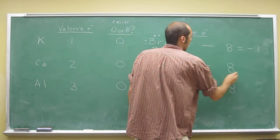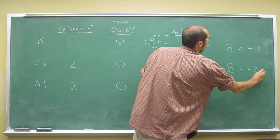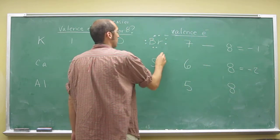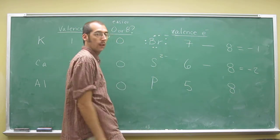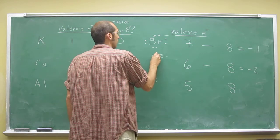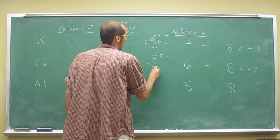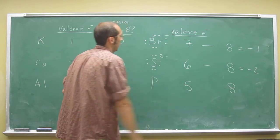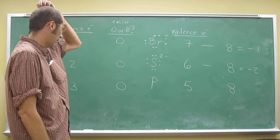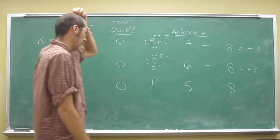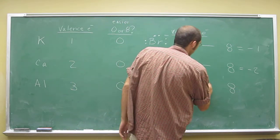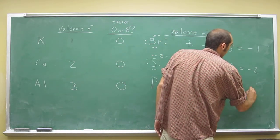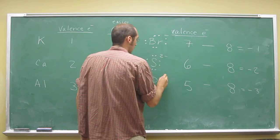So six minus eight equals negative two. So that's what you're going to have here. And if you look at the Lewis structures of all these ions, they're going to have that full octet. And what do you think here? Obviously, right? Three.